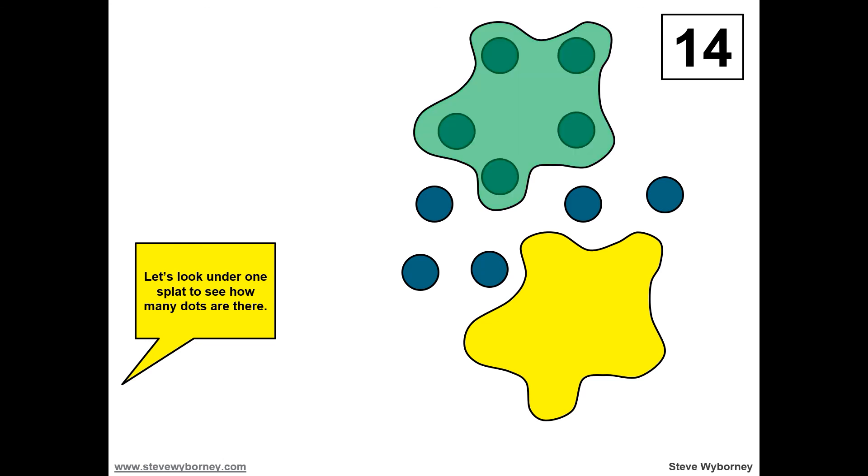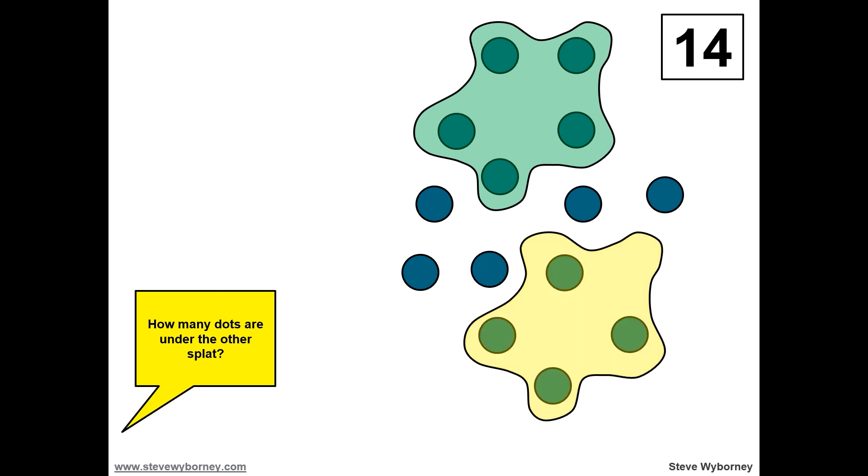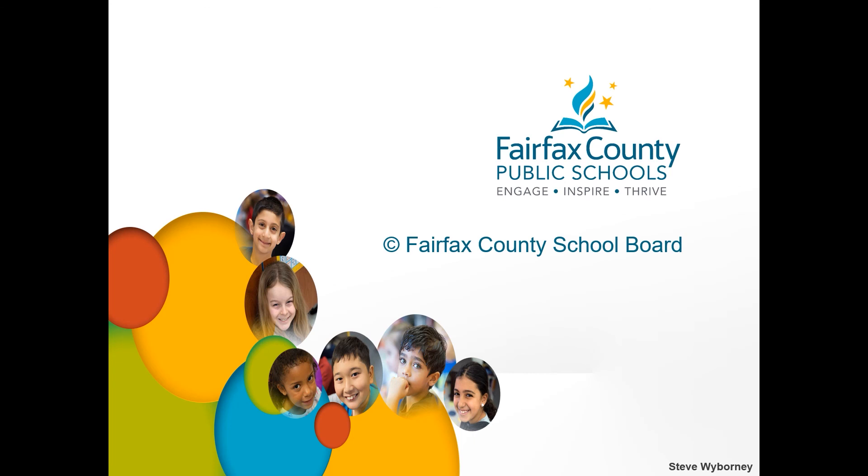There are five dots under the green splat. If there are five dots under the green splat, how many have to be under the yellow splat? There has to be four dots under the yellow splat. In today's episode of Math Matters, you thought about numbers using splat. Can you make your own splat problem at home? I'm Mrs. Parker, and thank you for watching. Have a great day.